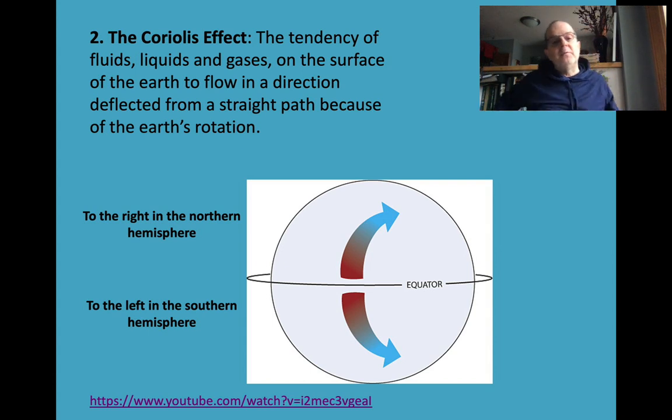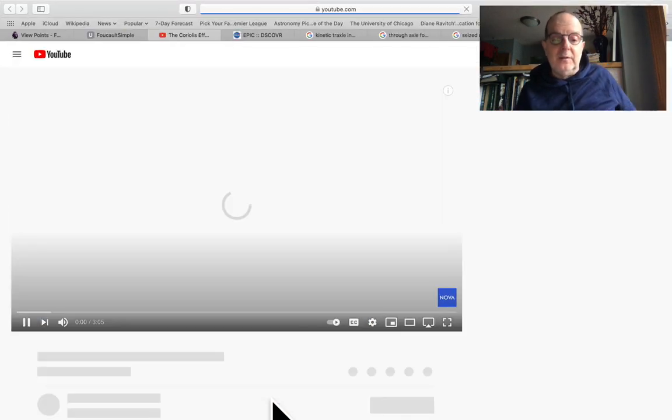The Coriolis effect is a second way we've satisfied ourselves that the Earth rotates. Fluids, which are defined as liquids and gases, on the surface of the Earth flow in a direction deflected from a straight path because of our rotation. In the Northern Hemisphere, a fluid—the wind or water—will be deflected to the right, and in the Southern Hemisphere to the left. Let's look at a little video that demonstrates this.